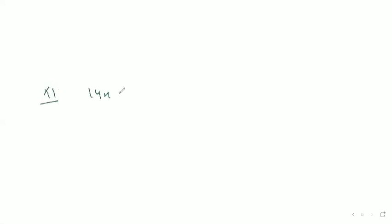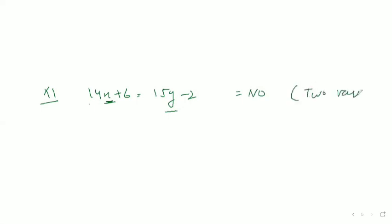Eleventh part: 14x + 6 = 15y − 2. It is clearly not a linear equation in one variable as two variables are there.